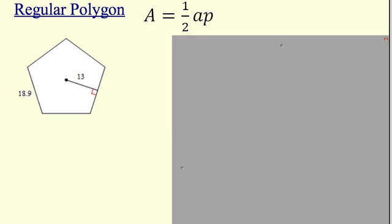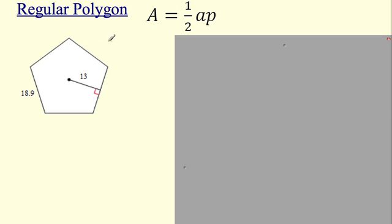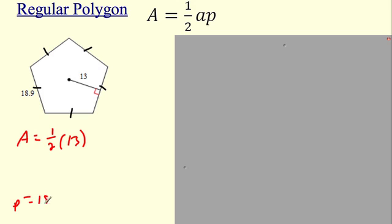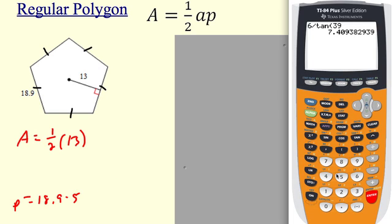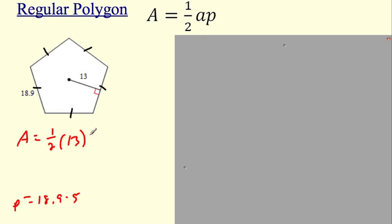Moving on to regular polygons — all sides congruent. For a regular pentagon with 5 sides, the formula is one-half times apothem times perimeter. The apothem is the segment that makes a right angle to a side. Here the apothem is 13 and each side is 18.9, so the perimeter is 18.9 times 5 = 94.5. Area = one-half times 13 times 94.5.